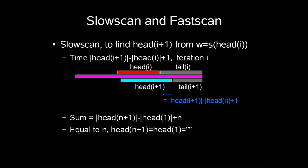Now to show how much time slow scan actually uses. We use slow scan to find head(i+1) from w equals s(head(i)). In example time length of head(i+1) minus length of head(i) plus 1 for iteration i which is shown below here. This is what's called a telescoping sum. The sum is equal to the length of head(n+1) minus length of head(1) plus n. This is equal to n since head(n+1) equals head(1) which is the empty string.